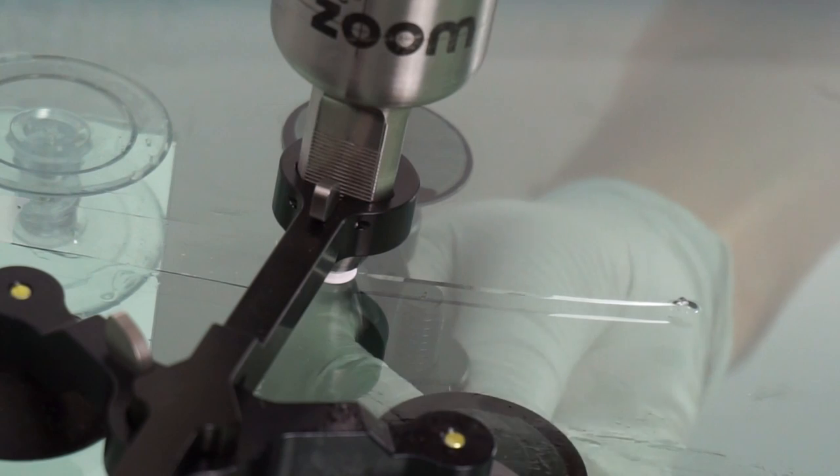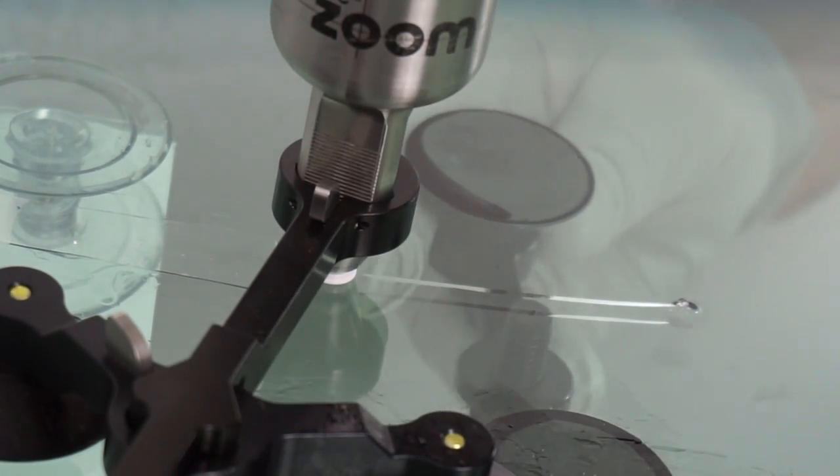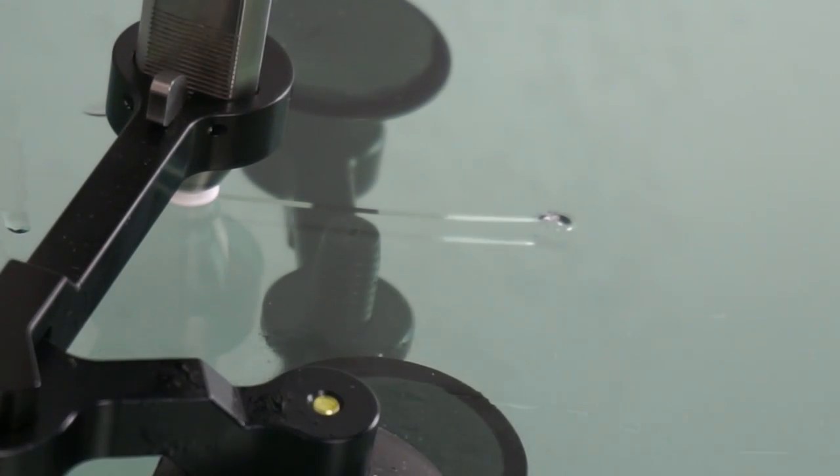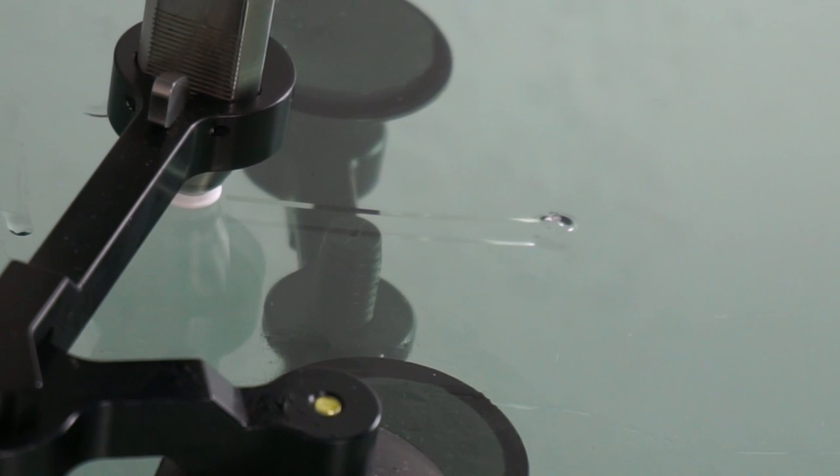You will likely need to reposition the crack expander two or three times during the process to ensure that it's always ahead of the injector body.